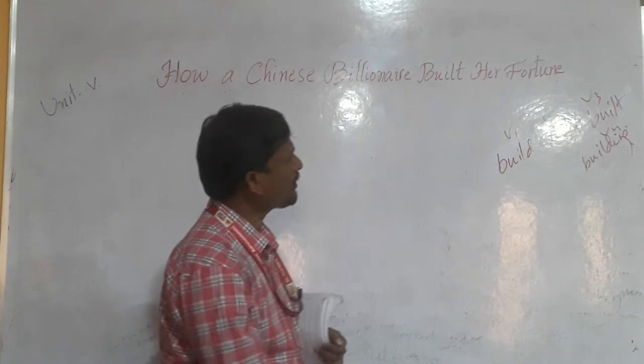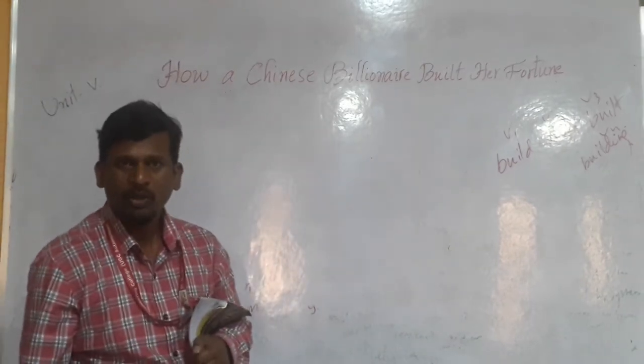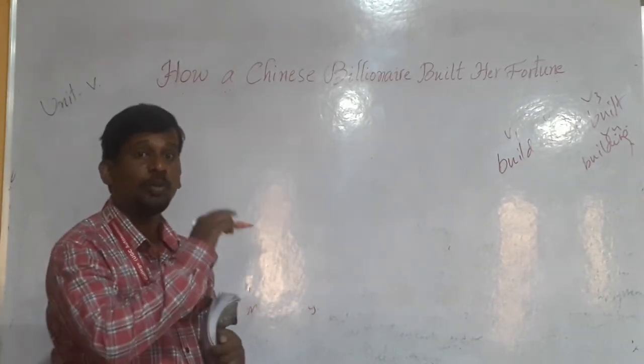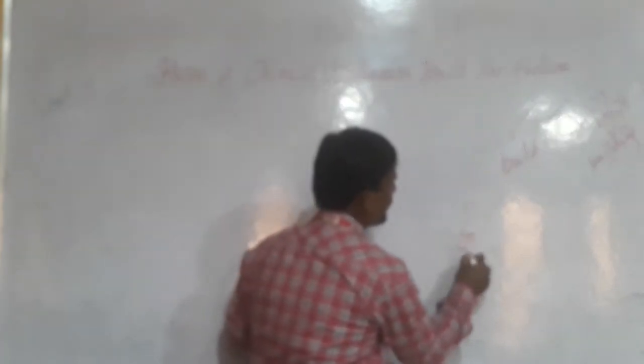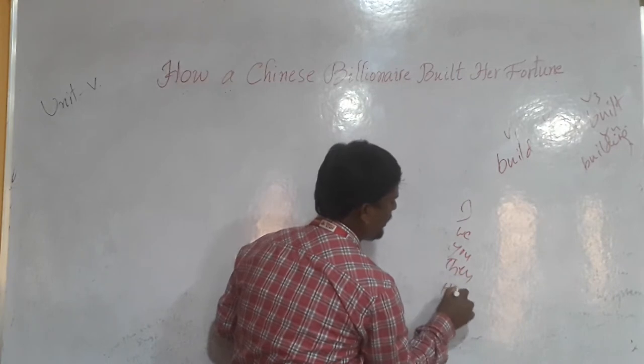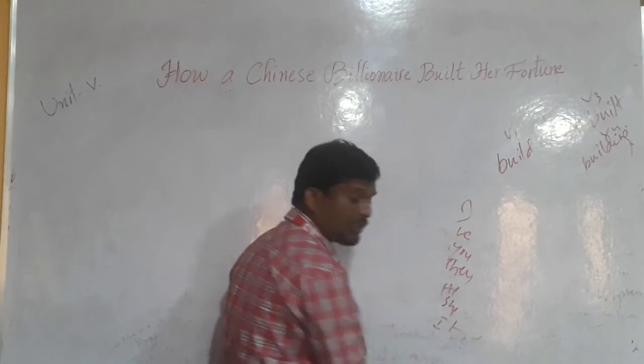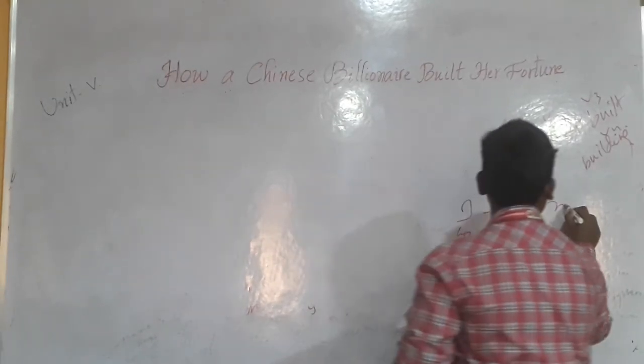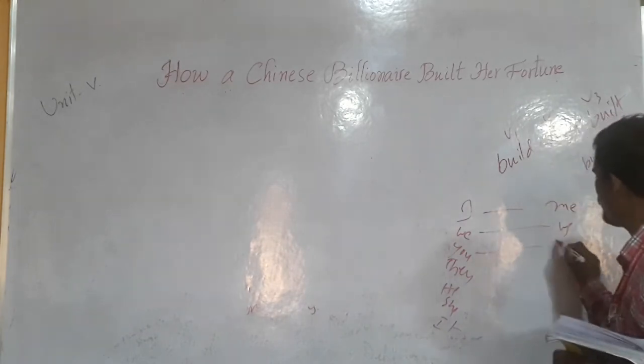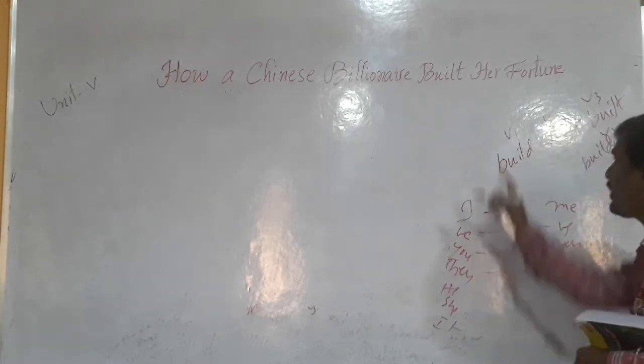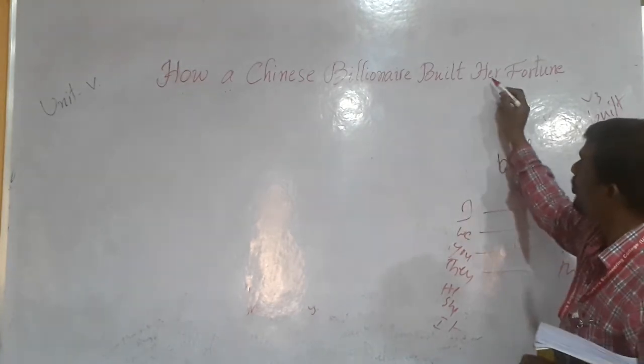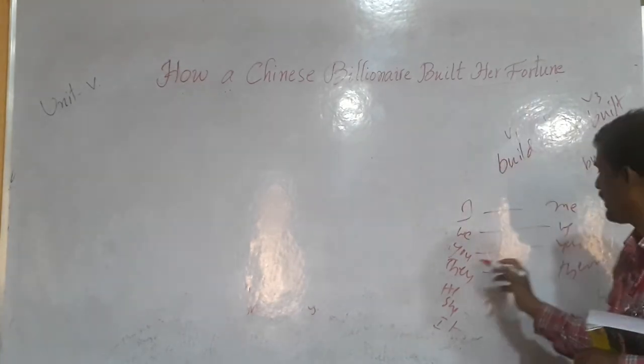Next, last one is fortune. H-E-R, R is a pronoun. In pronoun there are many types, this is a possessive pronoun. Possessive pronoun means here, see I, we, you, they, he, she, it are subjective pronouns. And here, me, us, you, them, objective pronouns.